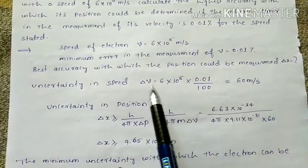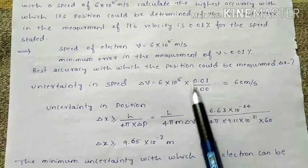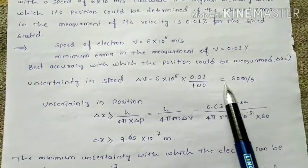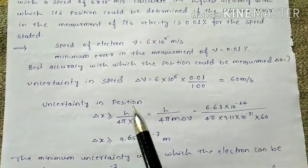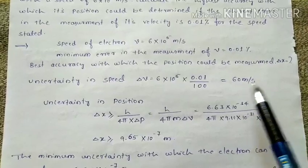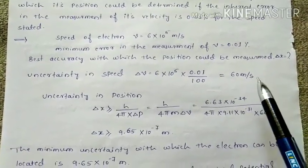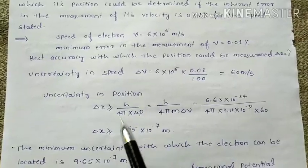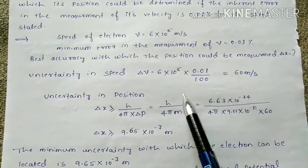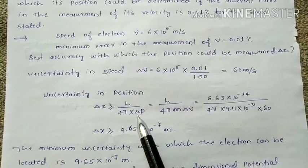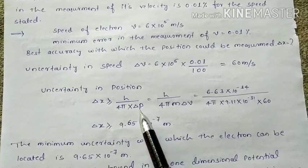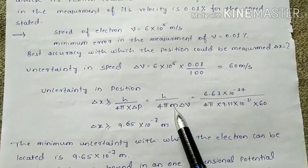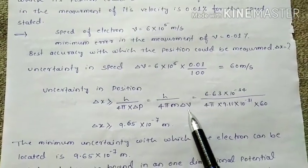First, calculate the uncertainty in speed: delta_v = 6×10⁵ × 0.01/100 = 60 m/s. Then apply the uncertainty principle: delta_x ≥ h / (4π × delta_p), where delta_p = m × delta_v. There is no uncertainty in mass, only in velocity.